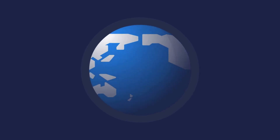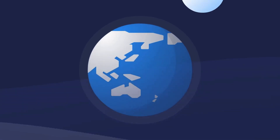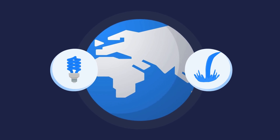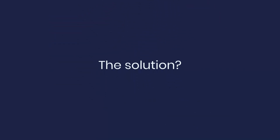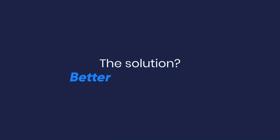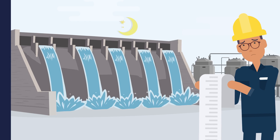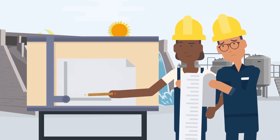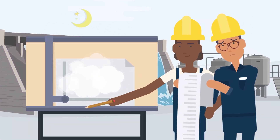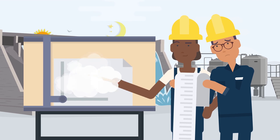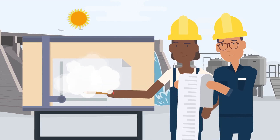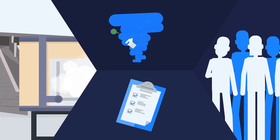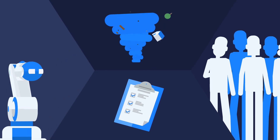Millions of people around the world lack access to clean water and renewable sources of power. The solution is simple — we need better infrastructure. But clean water and renewable energy projects take years to design and construct, and often don't account for future changes in climate, regulations, population growth, and innovative technologies.